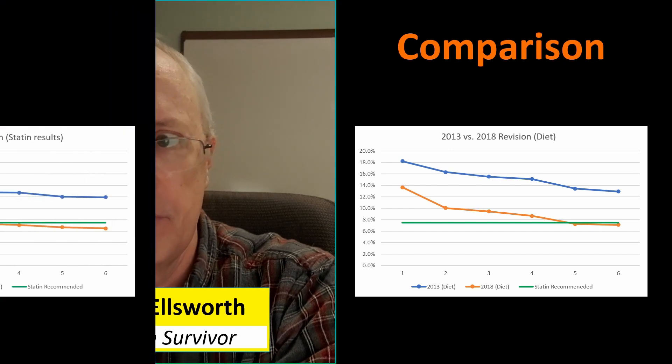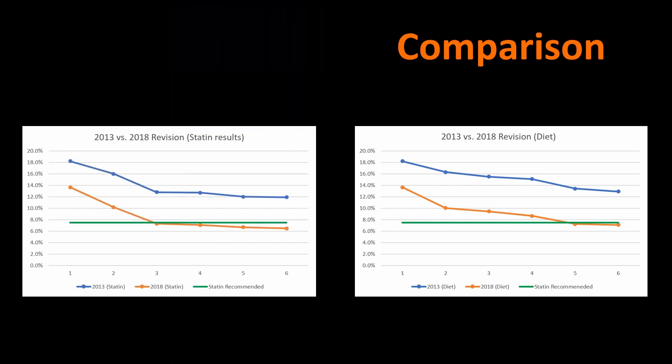Looking at statin results, they're very similar to diet. Statins actually drove my numbers down faster, but I'm not sure this equation is valid once you're on statins — similar to how blood pressure achieved through medication is treated differently. These equations are based on populations not on statins. And with statins, my total cholesterol was much lower, but so was my HDL — which is a very important component. I really think I did better through diet than through statins.